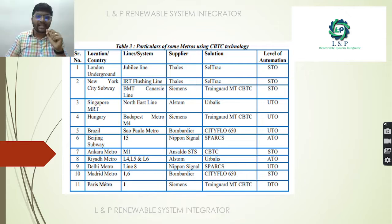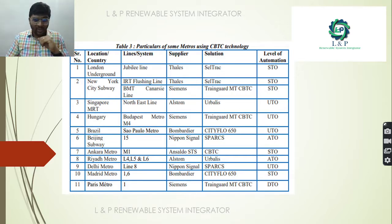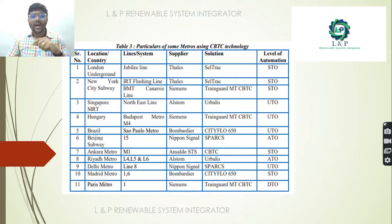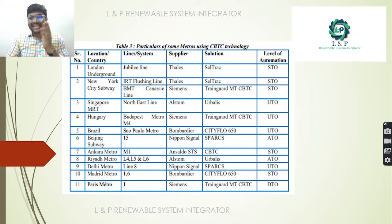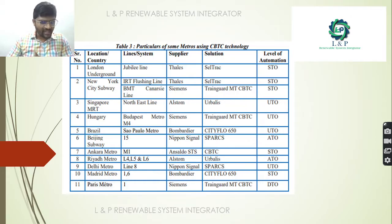Metros around the world implementing CBTC include London and New York with suppliers Thales and Siemens; Singapore with Alstom; Hungary with Siemens; Delhi Metro with Nippon Signal; Riyadh Metro with Alstom; Beijing with Nippon Signal; Brazil with Bombardier; and Paris Metro with Siemens. Different parts of the world have established different automation levels — STO, UTO, ATO, DTO.